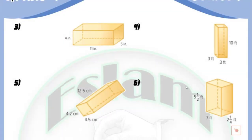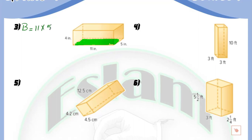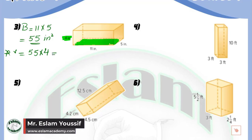In question number 3, we need to find the volume. Identify the base — the base is in the shape of a rectangle. The area of the rectangle equals length multiplied by width, which is 11 multiplied by 5, equaling 55 square inches. Then the volume equals 55 multiplied by the height, which is 4, giving an answer of 220 cubic units.